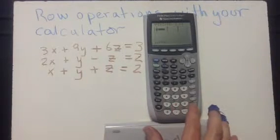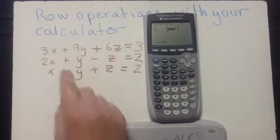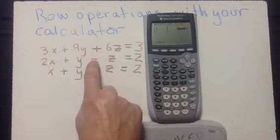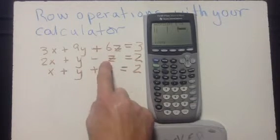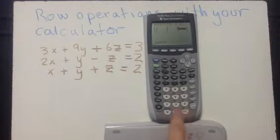I want a 2 there. Now, when there's no coefficient showing, what is it? It's a 1. Got to put a 1 there. When there's just a negative showing, what is it? It's a negative 1. So, choose the negative button, not the subtract button. Negative 1.